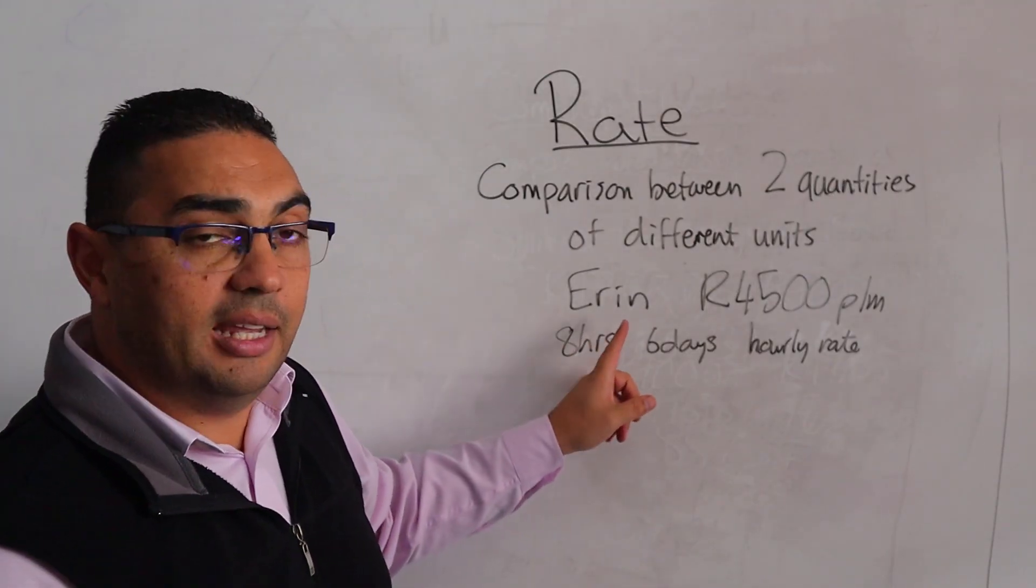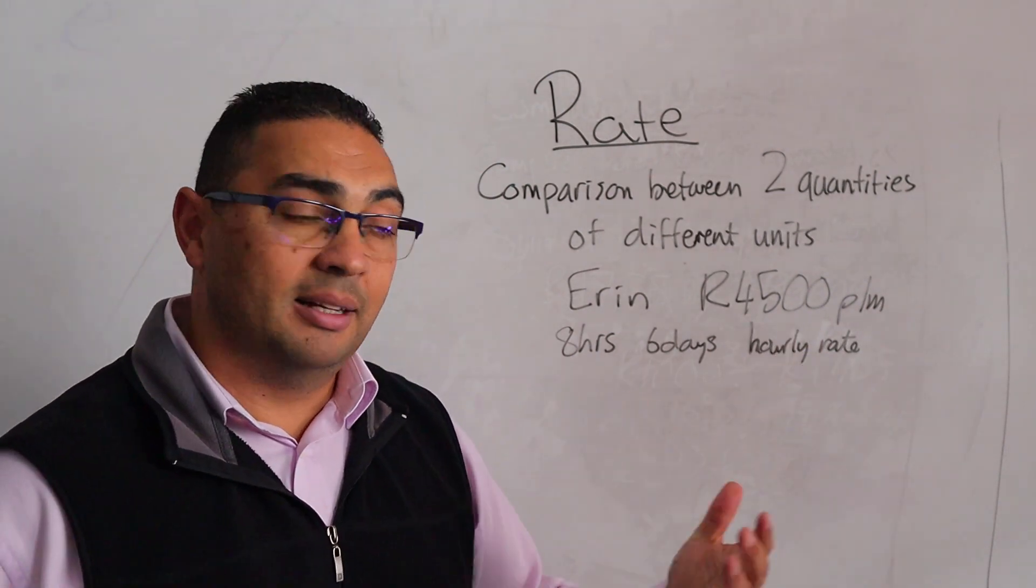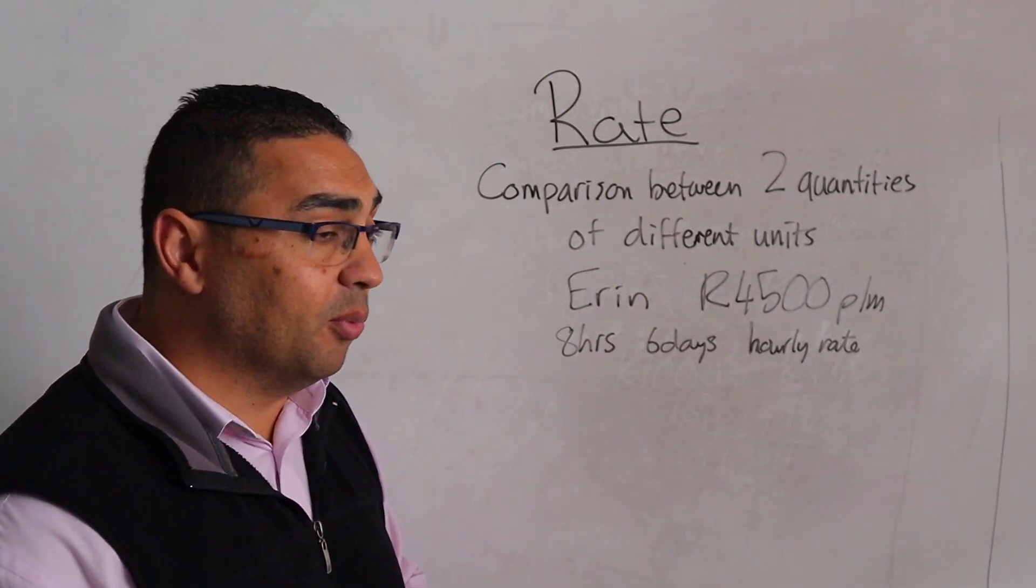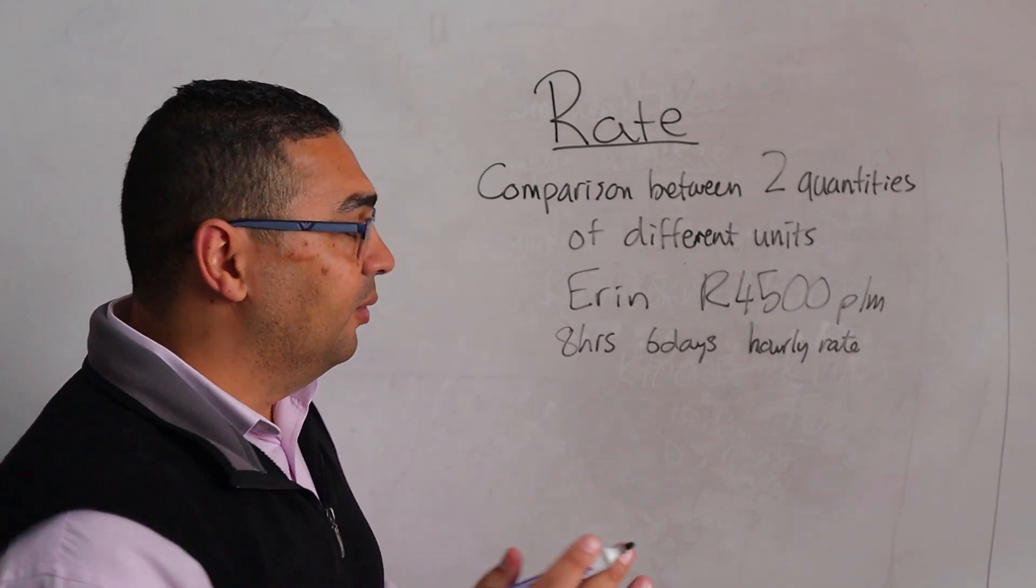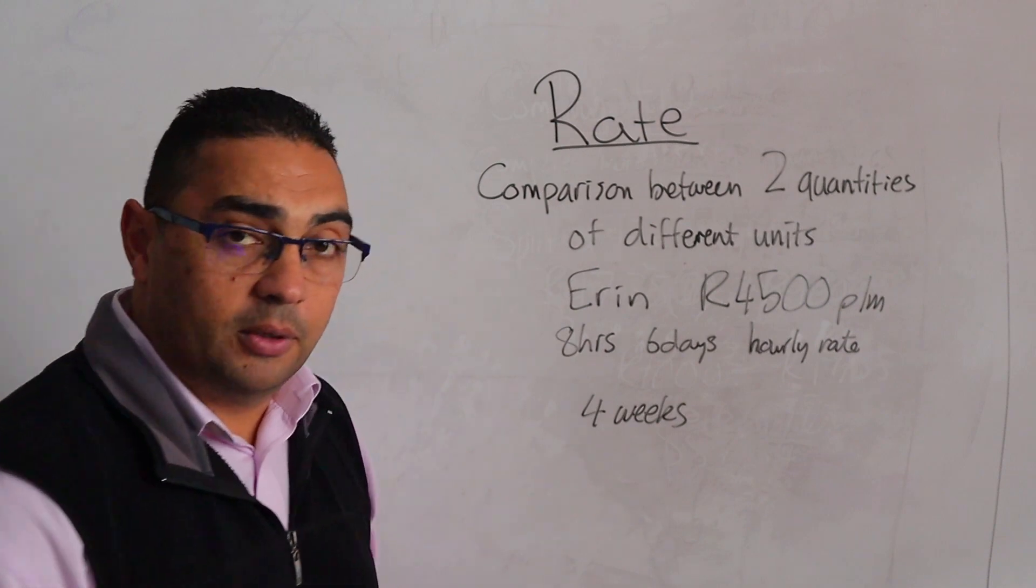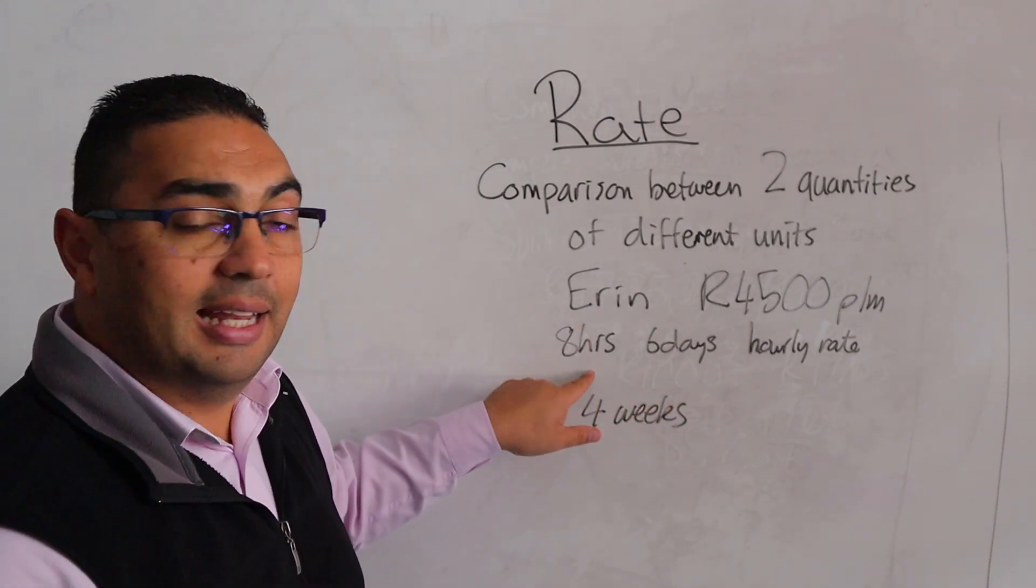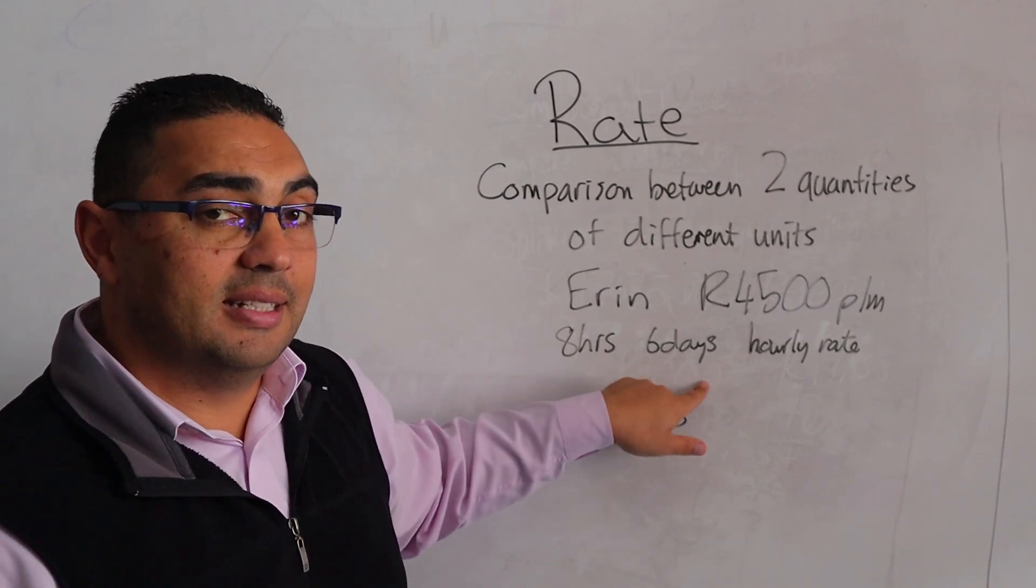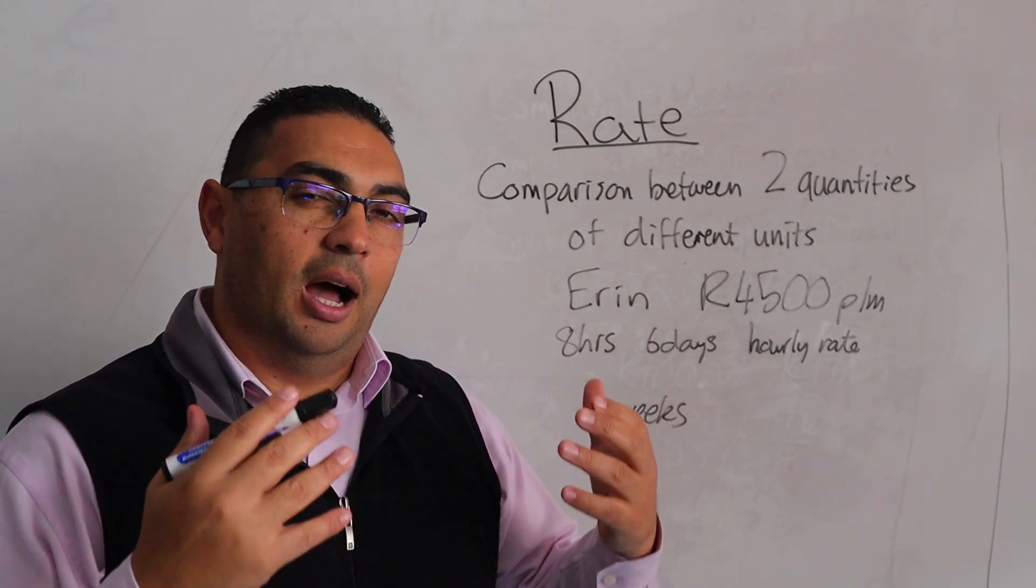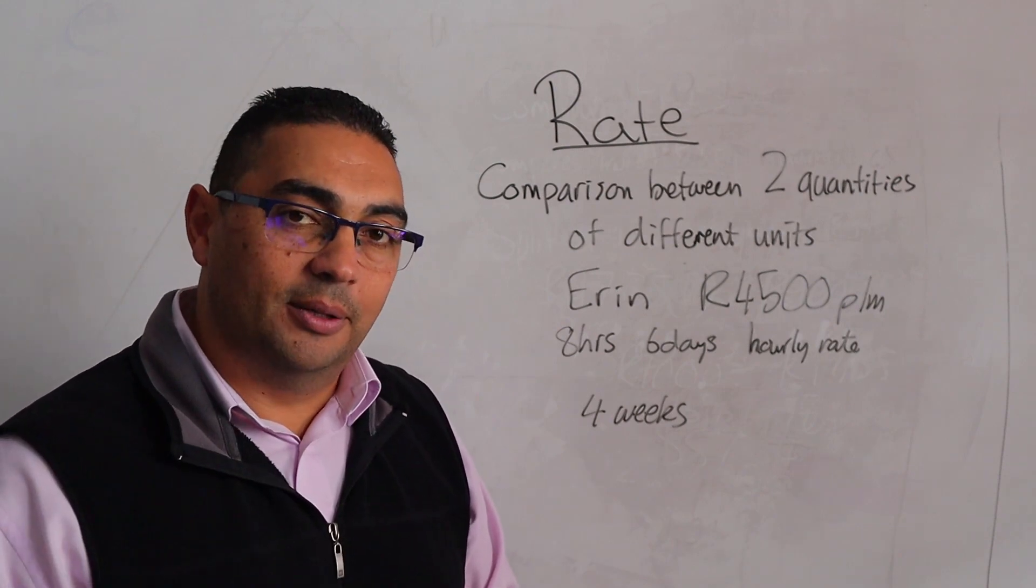In our final example, we have Erin who's earning 4,500 rand per month - for every month worked. When we look at months, we're looking at four weeks. They say Erin is working eight hours per day, six days a week. So how much is Erin actually earning per hour?